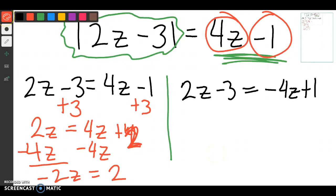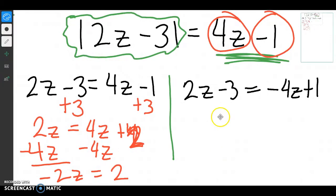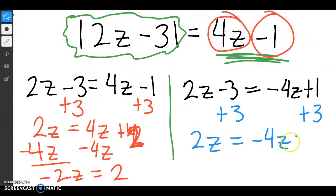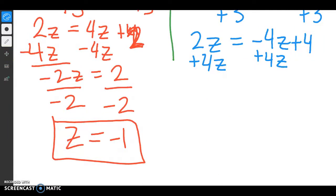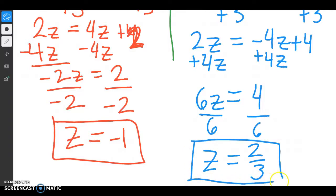So then I'll go back over here and I'll solve this other side. So I'll add 3 and I'll get 2z equals negative 4z plus 4. I'll add 4z and I'll get 6z is equal to 4. I'll divide by 6, and I'll get z is equal to, well, 4 divided by 6 is like .6 repeating, or if you simplify the fraction, 2 thirds. So this is my other potential answer.